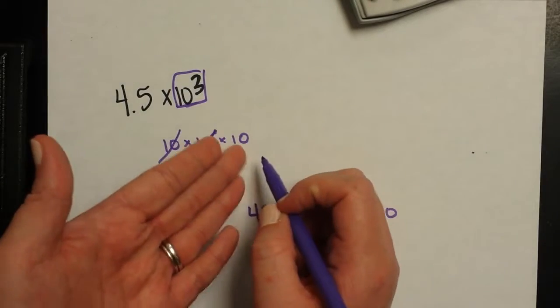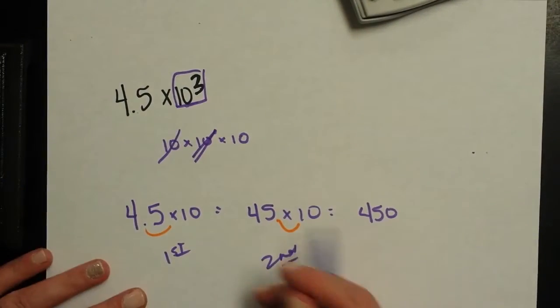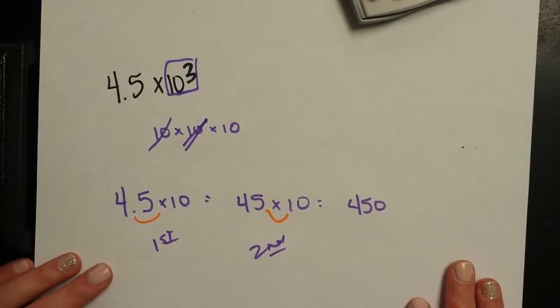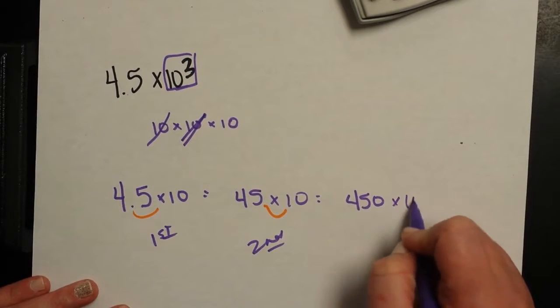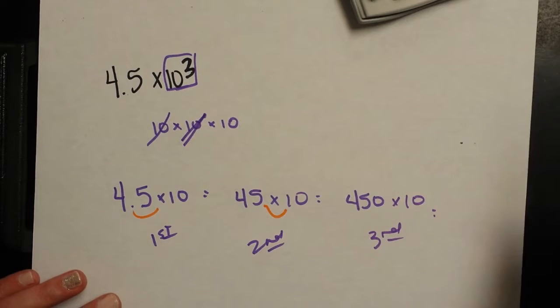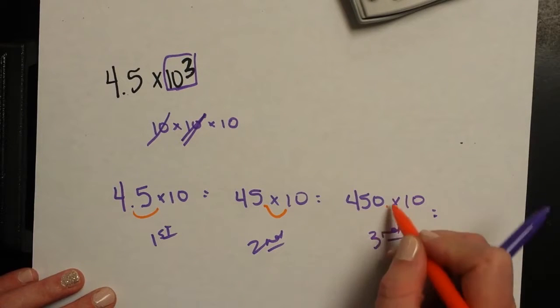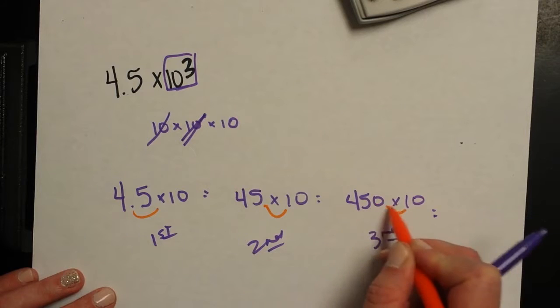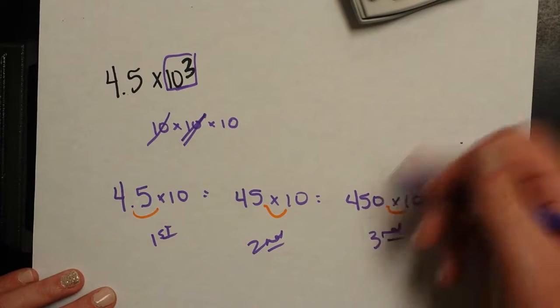I still need to multiply it by 10 another time to express whatever my scientific notation number is trying to tell me. Multiply it by 10 again. And right now our decimal place is here behind the 0. We need to move it to the right one more time. That's going to give us a second placeholder 0.